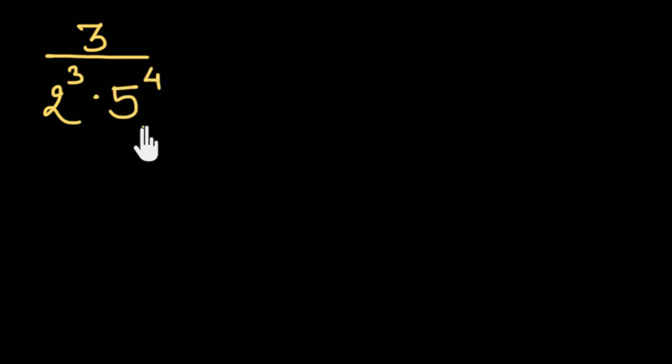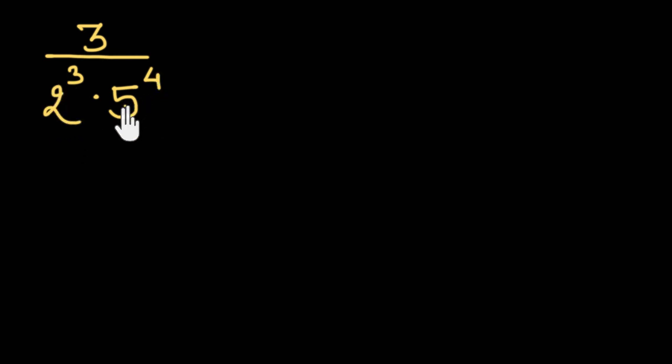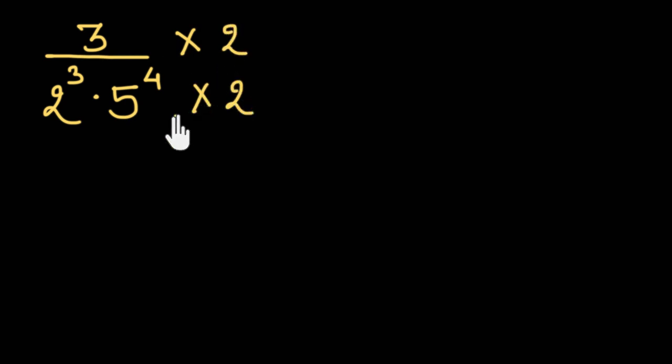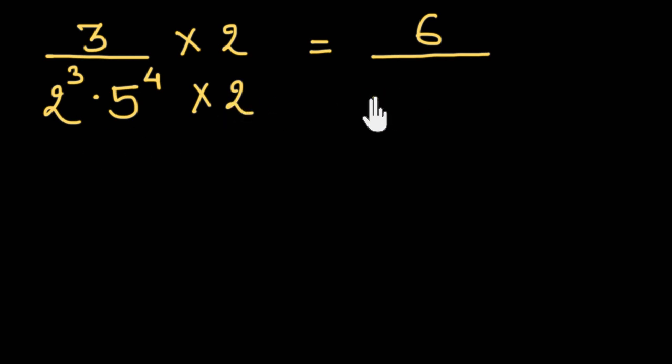Let's say that the simplest form of a rational number has 3 in the numerator and 2 cubed times 5 to the power 4 in the denominator. Is there a way to get a 10 or a power of 10 in the denominator? We need equal numbers of 2s and 5s. Here we have three 2s and four 5s. What we can do is multiply both numerator and denominator by an extra 2. This gives us 3 times 2 equal to 6 in the numerator, and 2 cubed times 2 gives us 2 to the power 4. We already have 5 to the power 4.